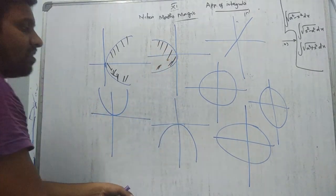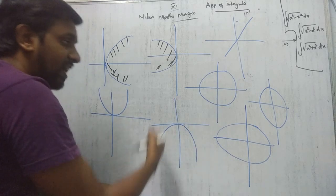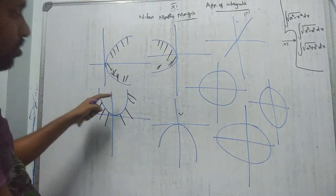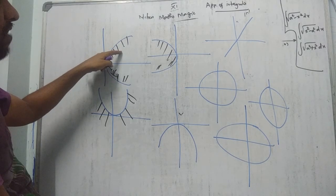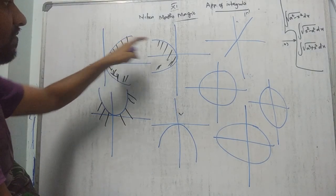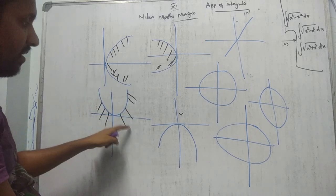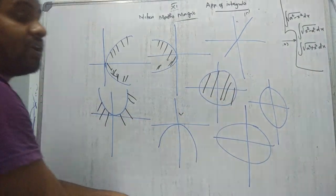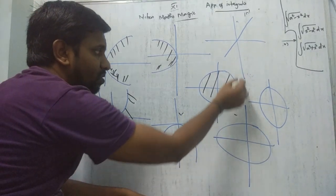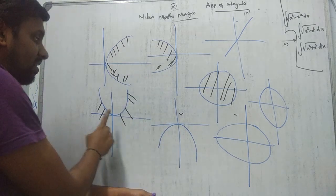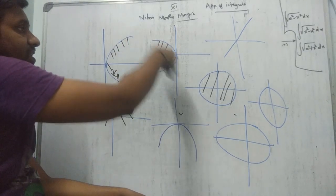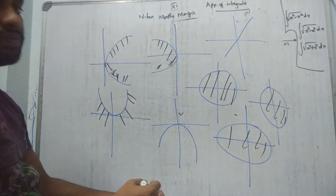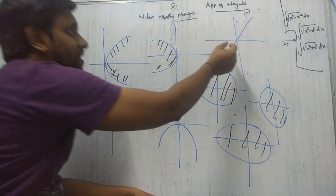Area under open upwards parabola — shade only outside, not inside. Area under the circle means inside the circle. Area under the ellipse is inside the ellipse. Area under a line: the region below the line. Area under a V-shape line: the region below the V. For a vertical line like x = 5, there is no 'area under' — that concept does not apply to vertical lines.